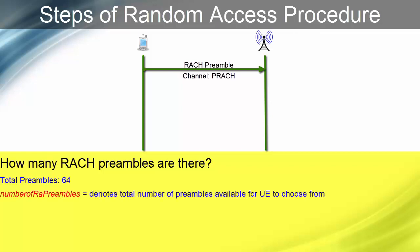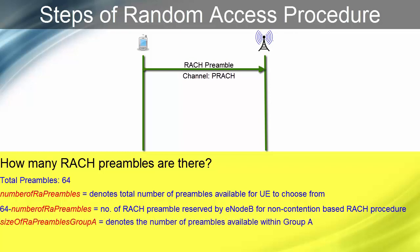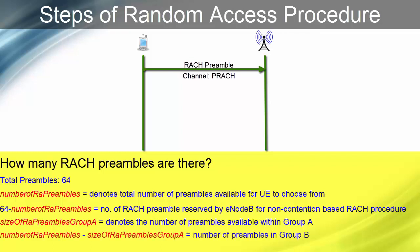SIB2 parameter 'number of RA preamble' denotes the total number of preambles available for UE to choose from. So, number of RA preambles reserved by eNodeB for non-contention based RA process is 64 minus number of RA preamble. Preambles available to UE are divided into two groups, Group A and Group B. Parameter 'size of RA preamble Group A' denotes the number of preambles available within Group A. Remaining preambles belong to Group B, so number of preambles in Group B will be number of RA preamble minus size of RA preamble Group A.